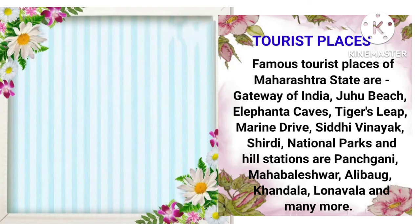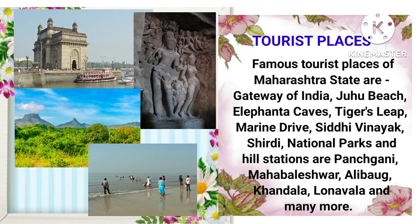Tourist places: Famous tourist places of Maharashtra state are Gateway of India, Juhu Beach, Elephanta Caves, Tiger's Leap, Marine Drive, Dhi Vinaya, Shirdi. National Parks and hill stations are Panchgani, Mahabaleshwar, Aliwag, Khandala, Lonavala and many more. And here are some pictures of tourist places of Maharashtra state which is very famous.